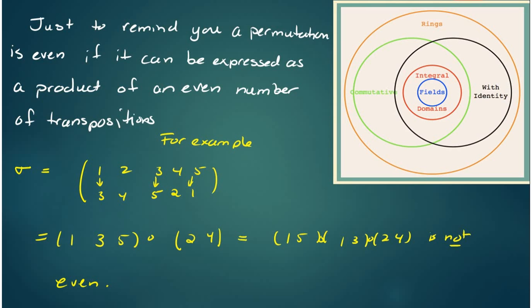For example if we have one goes to three, two goes to four, three goes to five, four goes to two, and five goes to one, I can write this as the transposition one, three, five because that's a cycle by itself. And then I can write the two and the four as a cycle by itself. So sigma can be written as a composition of two cycles.